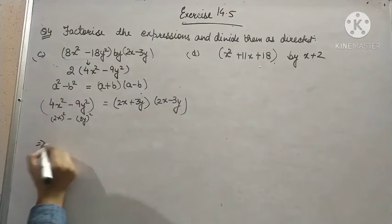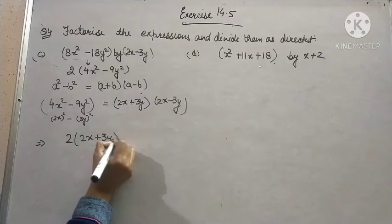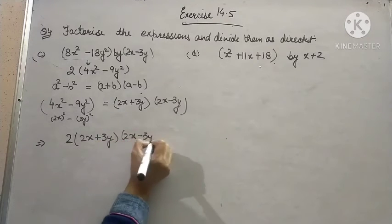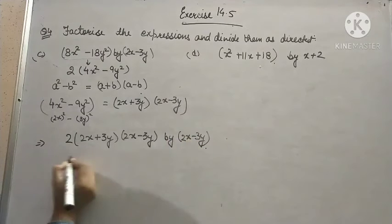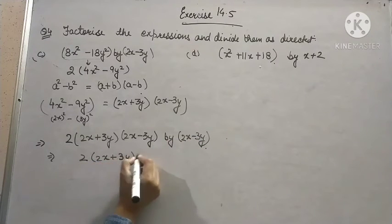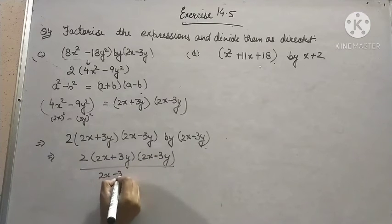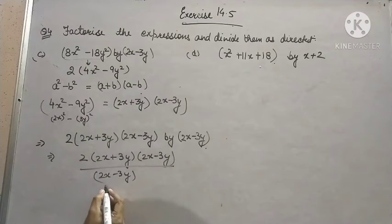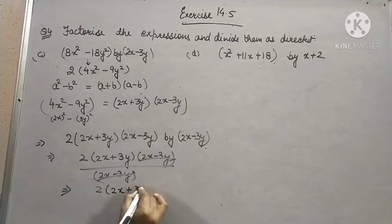So, finally, we obtain it as 2 into 2x plus 3y, 2x minus 3y to be divided by 2x minus 3y. So, write it in fraction form. You will get 2x minus 3y as the common factors. Divide them. Cancel them. Then, you will obtain 2 into 2x plus 3y as your final answer.